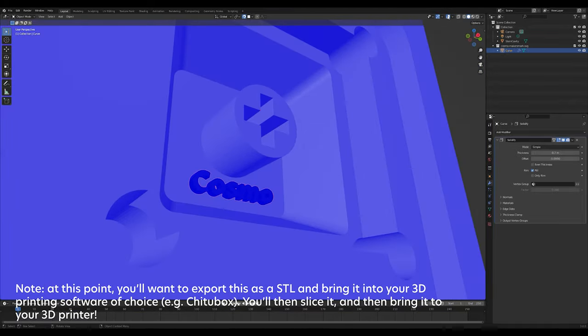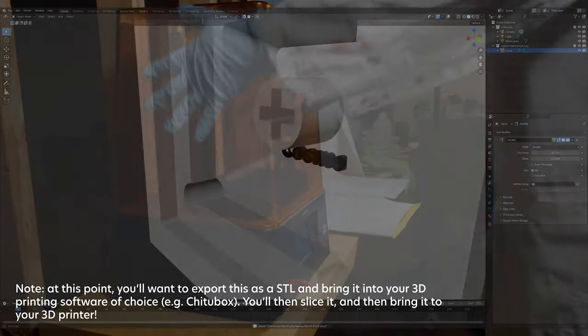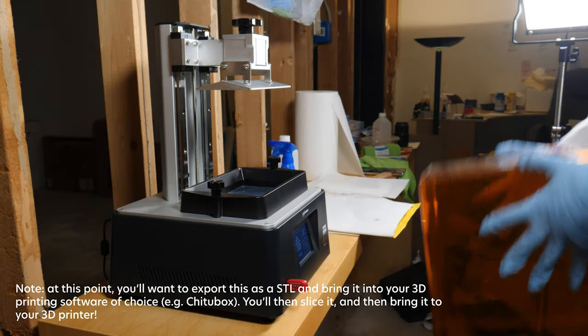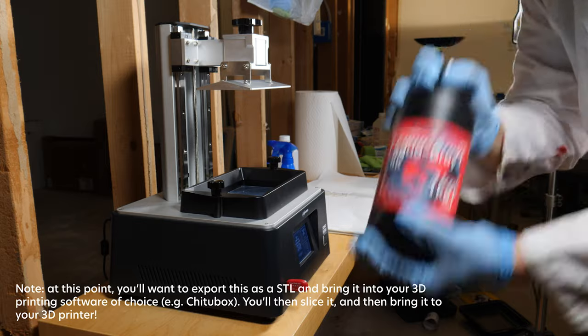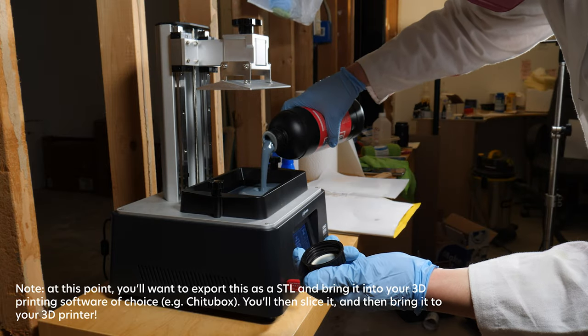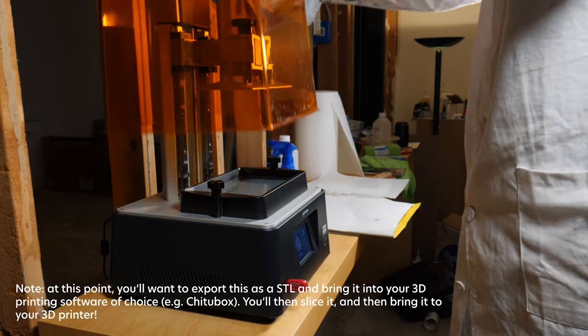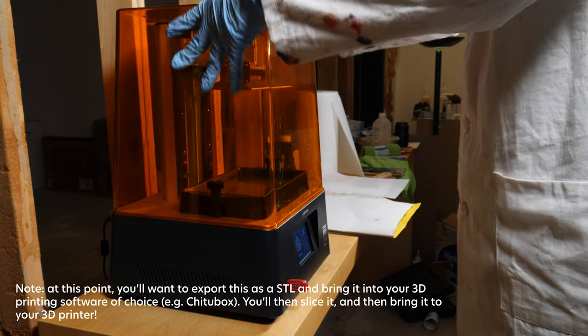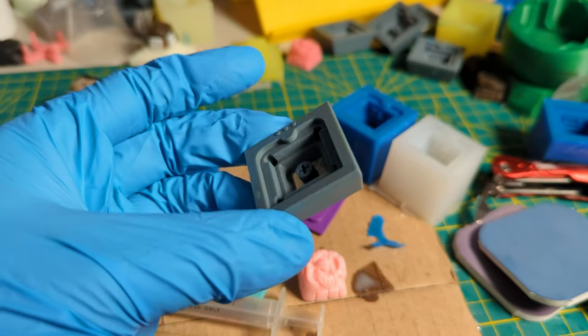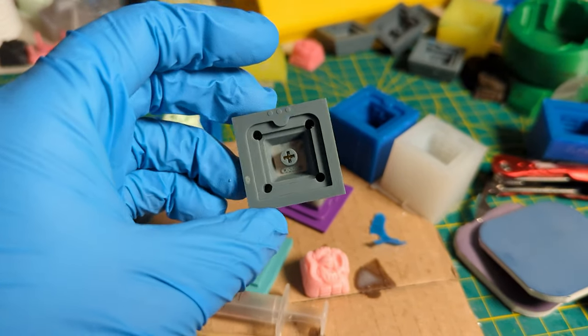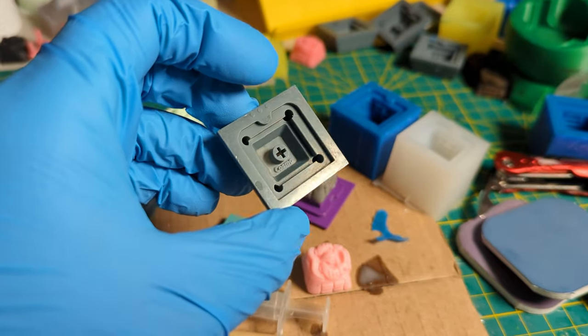So that's pretty much how I set up my stem cavity for printing. There was a lot of trial and error over the past couple of weeks and a lot of failed prints which I'm not showing you in this video, but I hope this helps to paint a better picture of some of the processes that you might do if you choose to get a 3D printer for your keycap making.